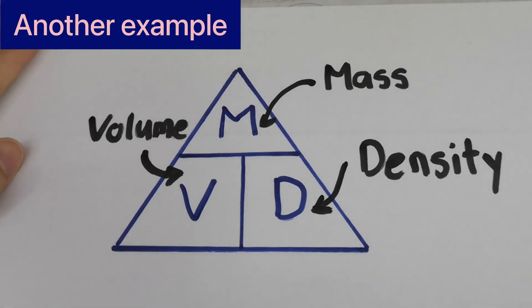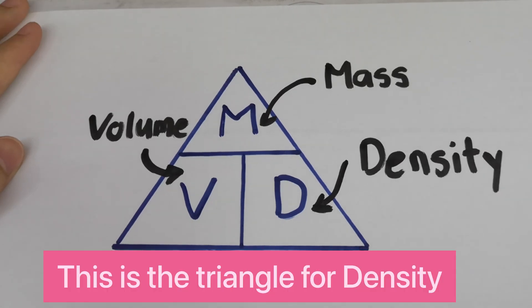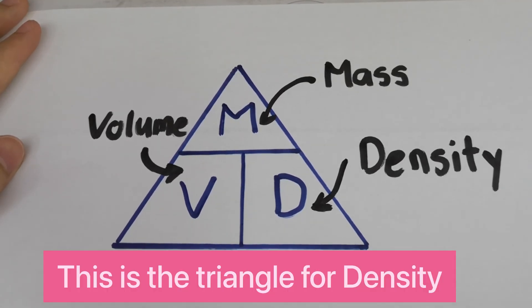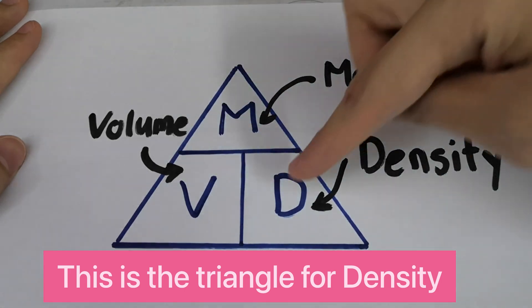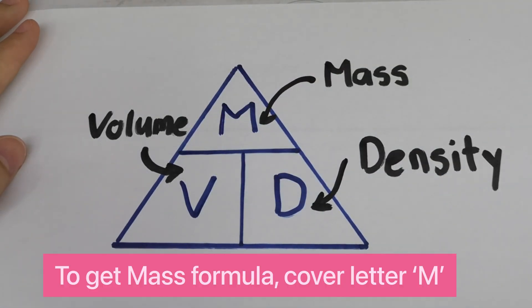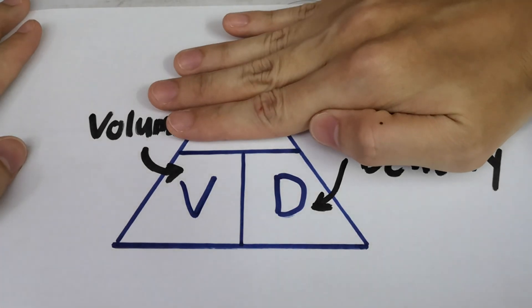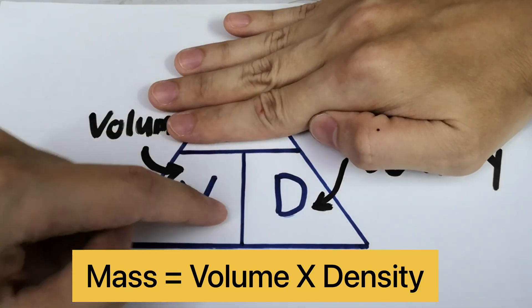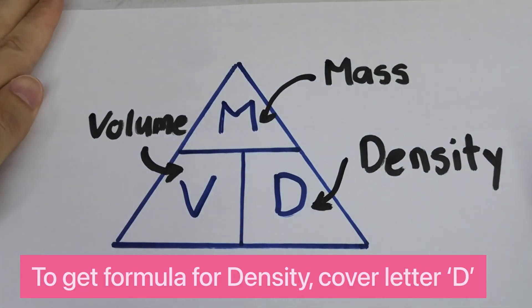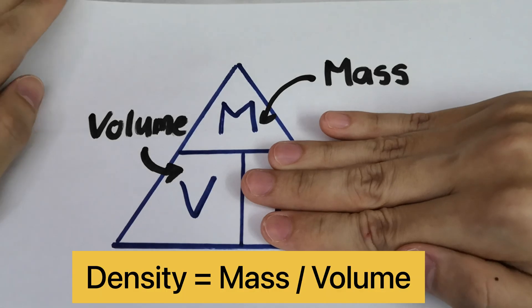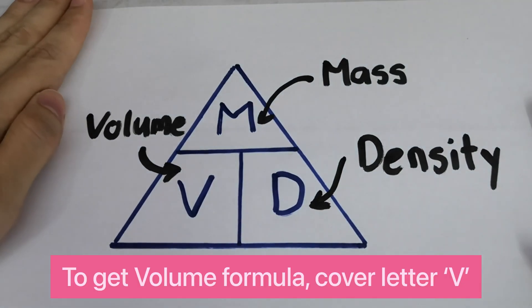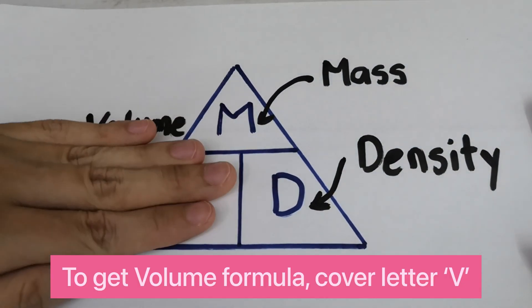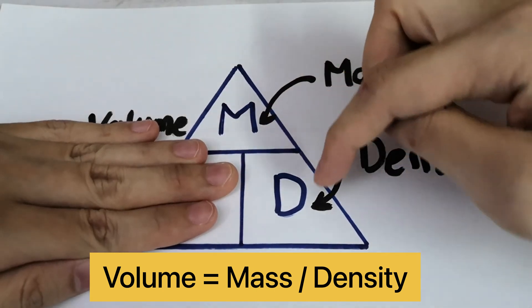The formula triangle is a very powerful tool you can use for other formulas as well. For the density formula, lay out M, V, D into the triangle — M for mass, V for volume, and D for density. Cover M: mass equals volume times density. Cover D: density equals mass divided by volume. Cover V: volume equals mass divided by density.